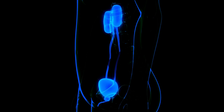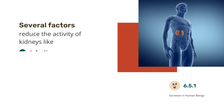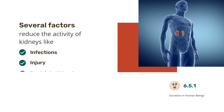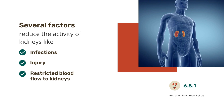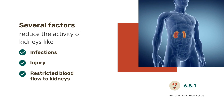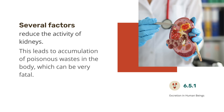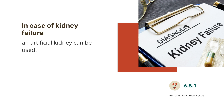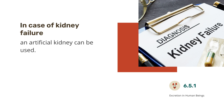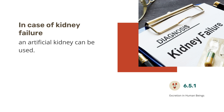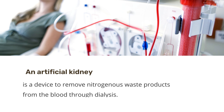Kidneys are vital organs for survival. Several factors, like infections, injury or restricted blood flow to kidneys, reduce the activity of kidneys. This leads to accumulation of poisonous waste in the body, which can be very fatal. In case of kidney failure, an artificial kidney can be used. An artificial kidney is a device to remove nitrogenous waste products from the blood through dialysis.